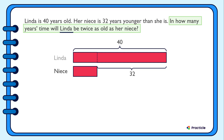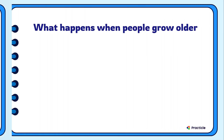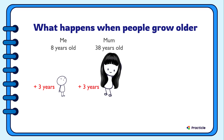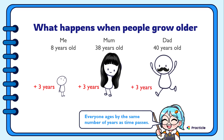We want Linda to be twice as old as her niece. And what do we know about growing older? As we grow older, the people around us grow older with us as well. If you are 3 years older, your mom will also be 3 years older, and so will your dad. And the same thing applies to Linda and her niece.